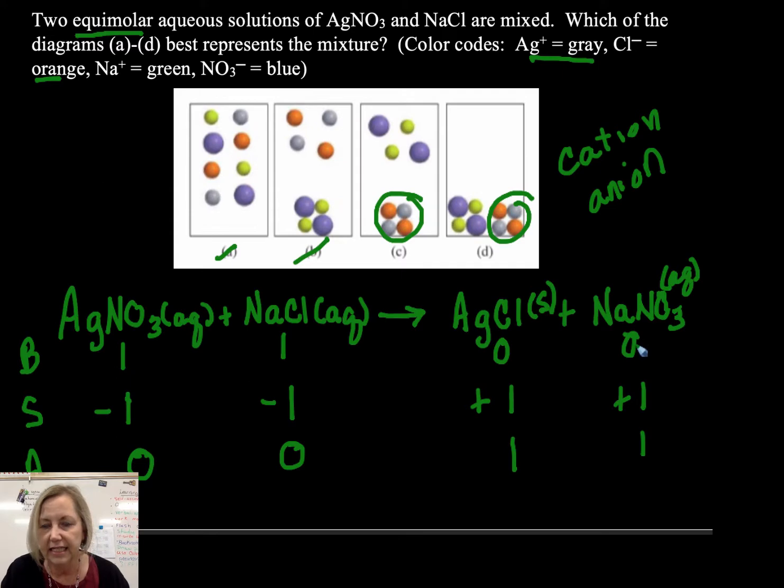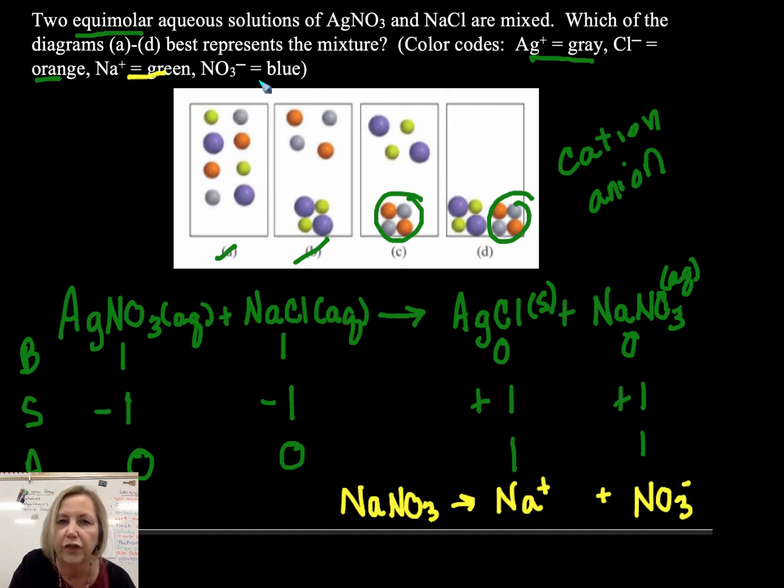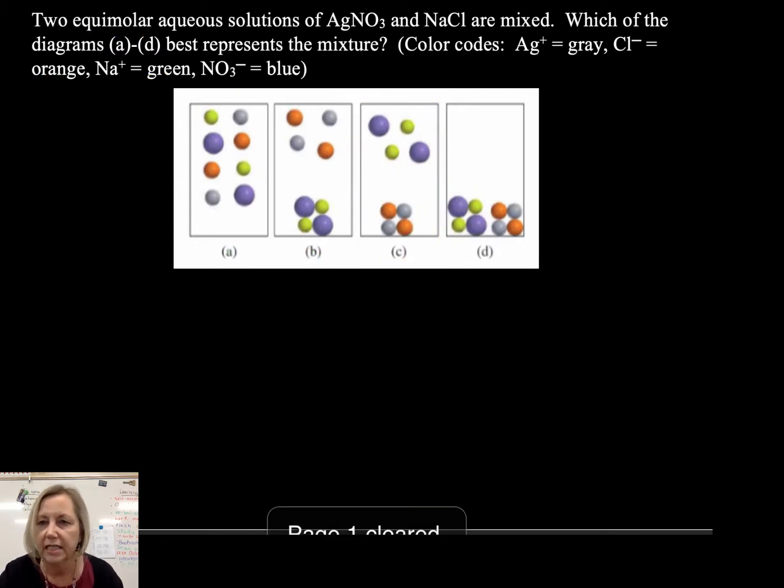So what we then have to look at is the silver nitrate. Silver nitrate is soluble, excuse me, sodium nitrate is soluble. Soluble salts dissociate into their ions. So I should see in my particle diagram sodium ions, which are green, and nitrate ions, which are the blue, still floating around in solution, not as a solid. So that means that C represents my final mixture after the reaction has occurred. All right, so that's one of the things you want to look at. Soluble ionics would separate into their separate particles once they're in solution.